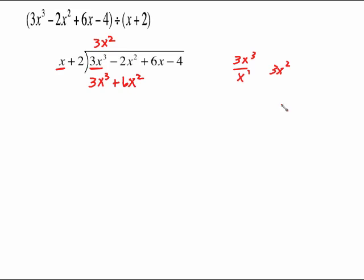Then you want to draw the line and change these signs. That's your subtraction step. Your 3x cubed and your negative 3x cubed cancel which is what they're supposed to. Negative 2x squared, negative 6x squared is negative 8x squared. And we are ready to bring down the next term which is a positive 6x.